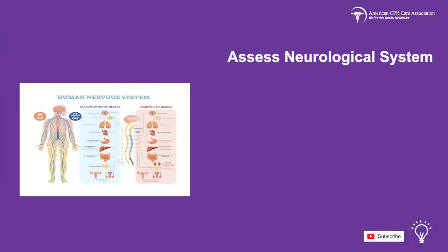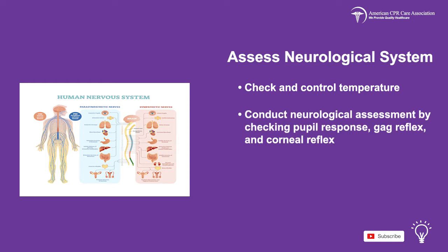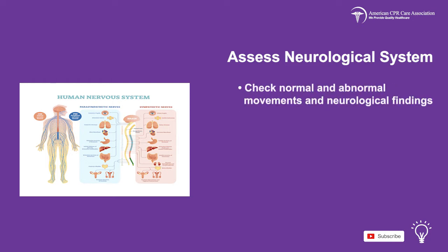Now move on to the child's neurological system and assess. Check and control the patient's temperature. Conduct a neurological assessment by checking pupil response, gag reflex, and corneal reflex. Check for cerebral herniation and identify seizures. Check normal and abnormal movements and neurological findings.